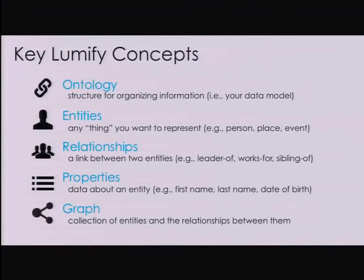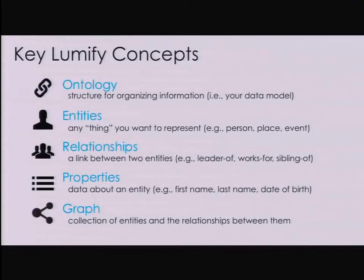Properties are essentially any metadata about the entities or relationships. So a person can have a first name, a last name; perhaps an employment relationship has a start date, end date, that sort of thing. And then the graph is the collection of all of the instances of those entities, relationships, and properties defined in the ontology. So the ontology is the abstract definition, and the graph is the collection of all those instantiated instances.